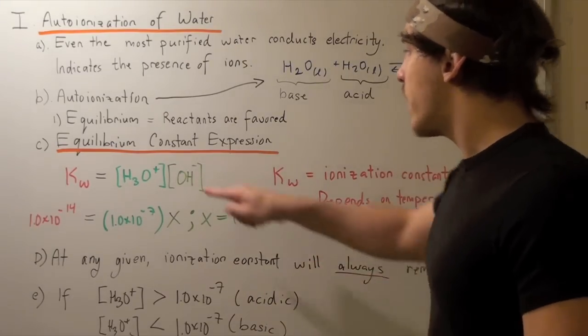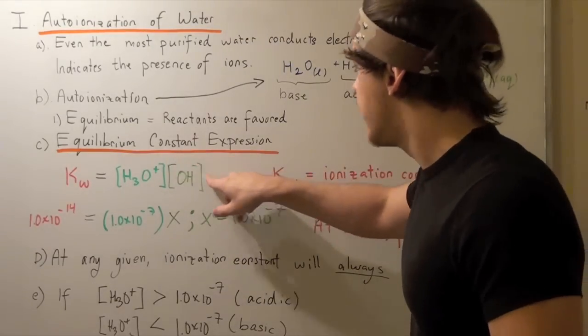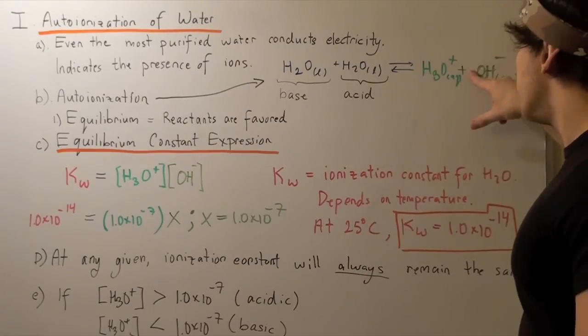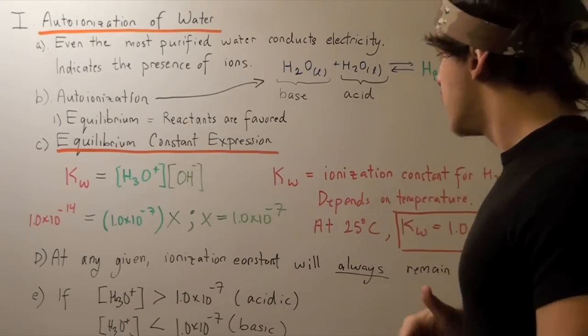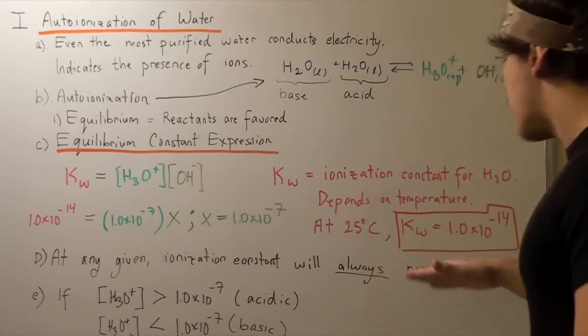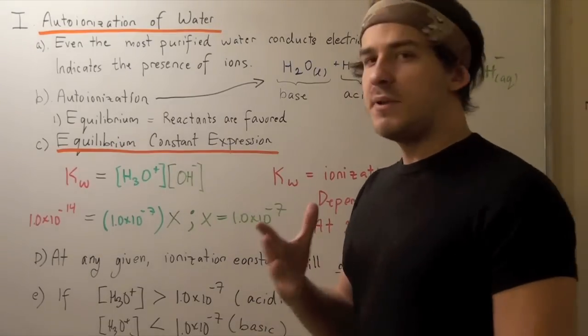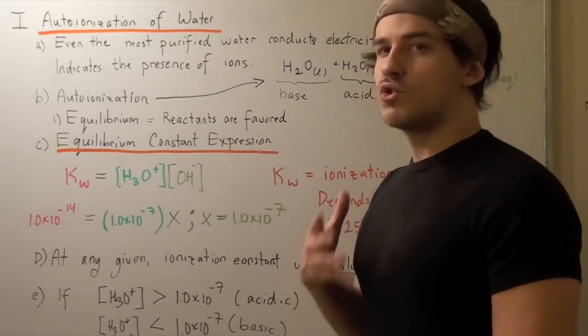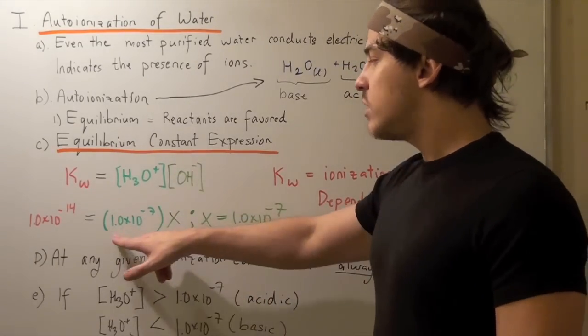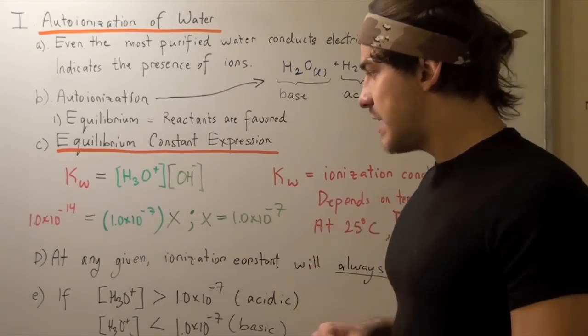Notice that our exponents here are 1 and 1, because we have 1 mole and 1 mole. Since we know our Kw, and from experiments we know that at a pH of 7, our concentration of hydronium is 1.0 times 10 to negative 7.